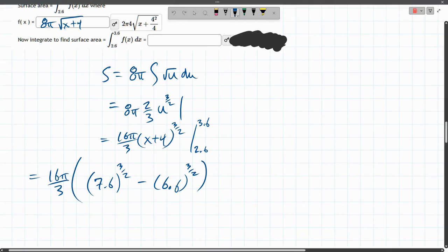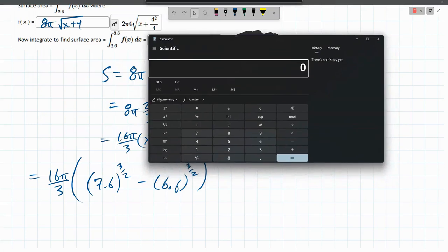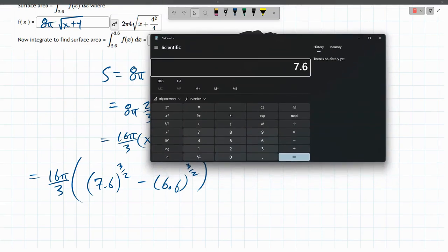When I uncover the answer, it's going to be a decimal. So let's get out a calculator. Probably should have done this beforehand. But it's all right. All right. 7.6.